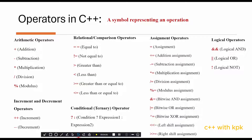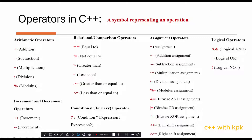Next is the subtraction assignment. An example would be a -= b. What happens here is that it subtracts the value of b from a. This is the same as a = a - b.